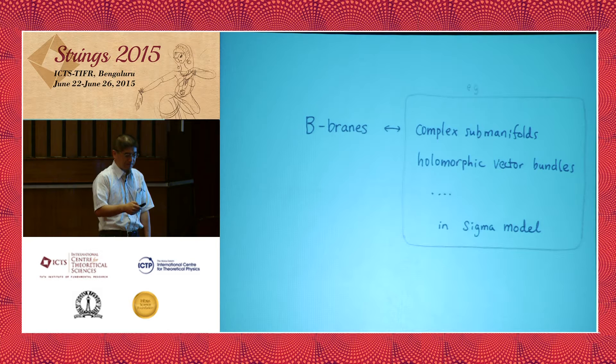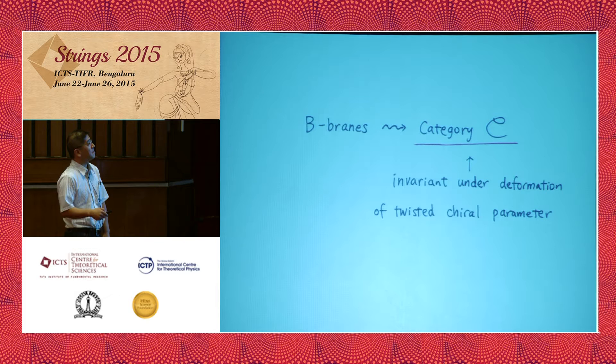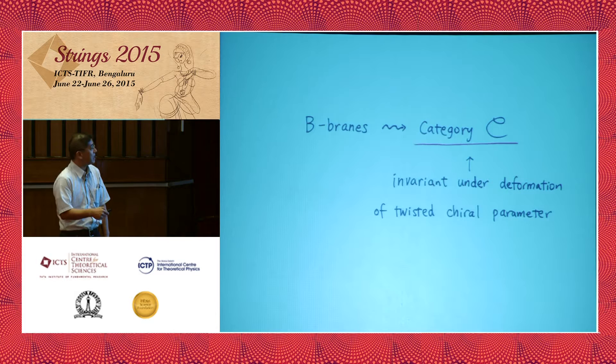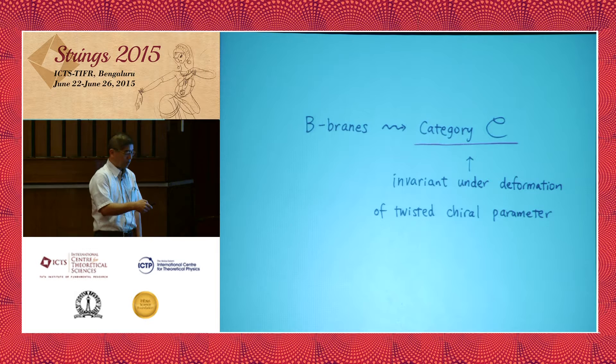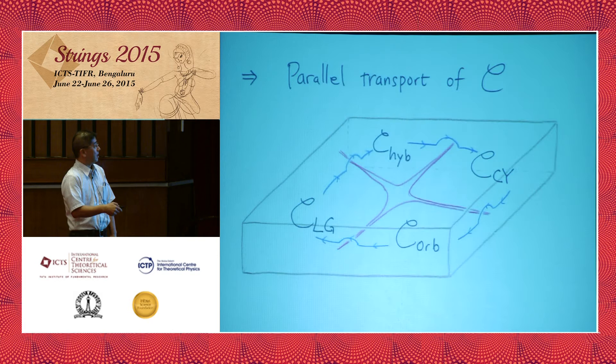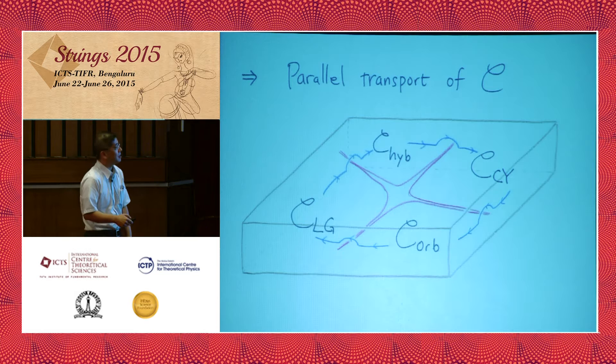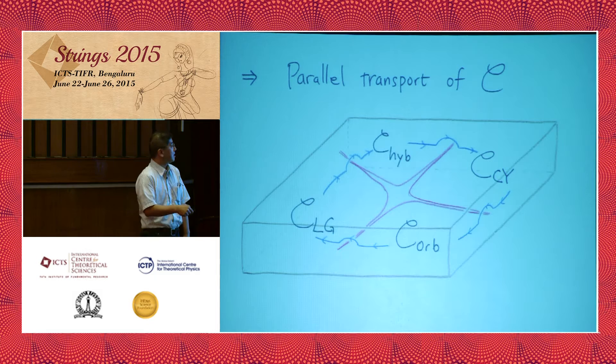Branes have an RG-invariant protected structure called the category of branes, which is like a boundary analogue of the chiral ring. For B-branes, this is invariant under deformation of twisted chiral parameters, so we may consider parallel transport of this category of branes on the space of FI-theta parameters. We can relate the category of branes in one phase to the category in another phase by going along some path that avoids the discriminant locus.